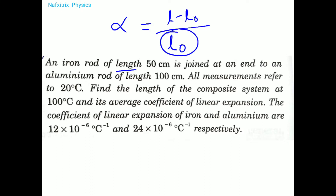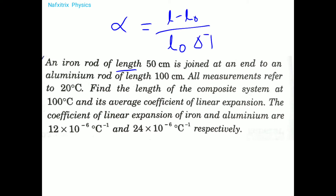Initially a rod has some length, and after heating — when we raise the temperature — it expands. The fractional change in length divided by the temperature change delta T gives us the coefficient of linear expansion alpha. This tells us how much fractional change in length we observe for one degree rise in temperature.